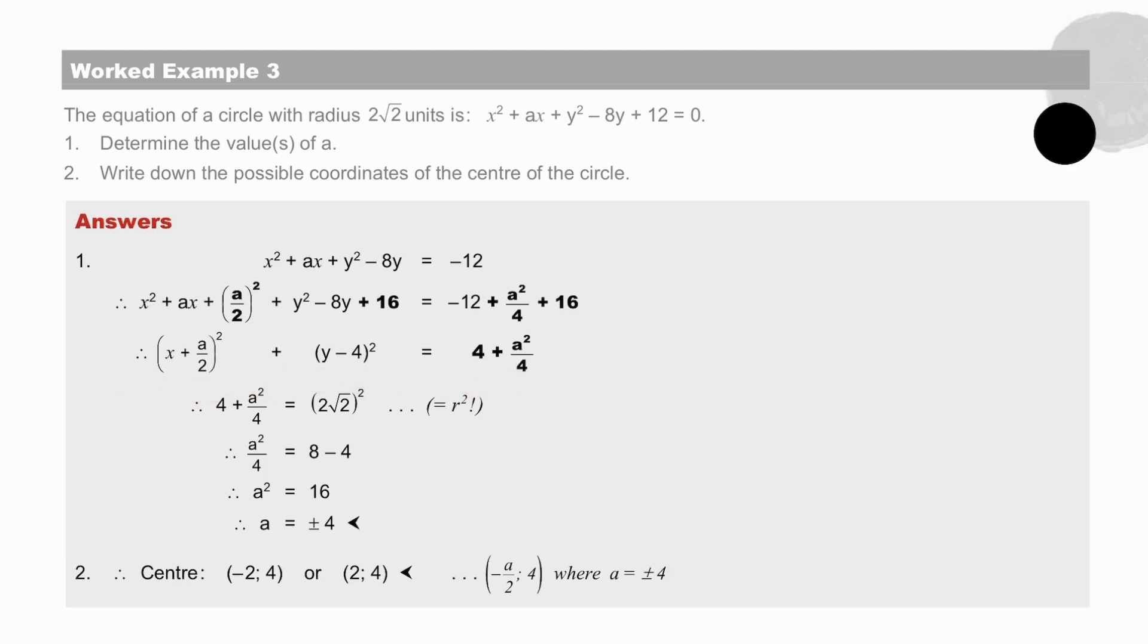We arrive at the standard form of the equation. The centre of which is then -a/2, 4. And in place of r², we have an expression in a. So we equate. And we arrive at two values for a, plus or minus 4, which we substitute in the centre. The x-coordinate is -a/2. And then we get two possibilities for the centre, (-2, 4) or (2, 4).